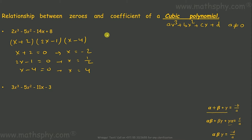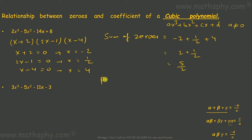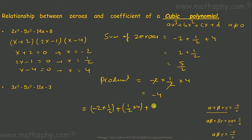For the cubic polynomial 2x cubed minus 5x squared minus 14x plus 8, factorization gives (x plus 2)(2x minus 1)(x minus 4). So the zeros are x equals negative 2, x equals 1 over 2, and x equals 4. Sum of zeros: negative 2 plus 1/2 plus 4 equals 5 over 2. Product alpha·beta·gamma: negative 2 times 1/2 times 4 equals negative 4. And the paired products sum: negative 2·(1/2) plus (1/2)·4 plus 4·(negative 2) equals negative 1 plus 2 minus 8 equals negative 7.